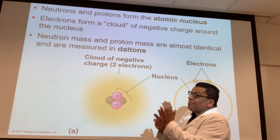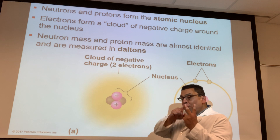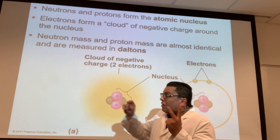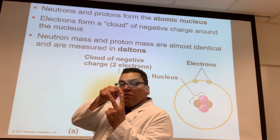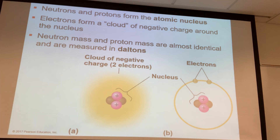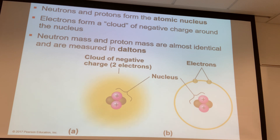So from the atomic number, we can get two pieces of information: the number of protons, and because all elements are not charged, the number of protons equals the number of electrons. Carbon has a mass number of 12 and an atomic number of 6. Number of protons equals 6. Neutrons equals 12 minus 6, which is 6. And since carbon is not charged, electrons equals 6 as well.